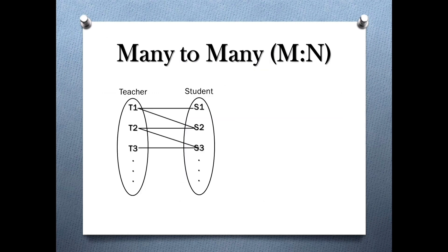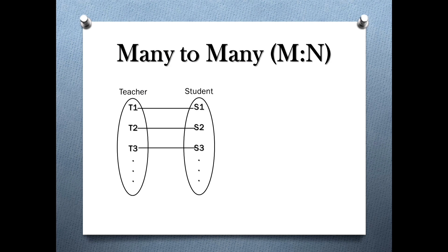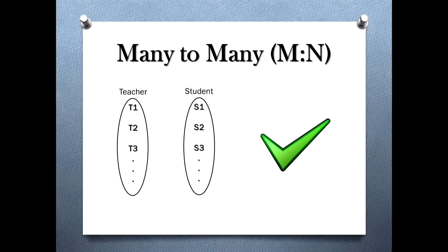The last type is many to many relationship. It can be defined as: if any number of entities in the first entity set can relate to any number of entities in the second entity set, and vice versa, then it is a many to many relationship. For example, one teacher can teach multiple students, and one student can be taught by multiple teachers. Even if every entity is related to just one entity of the other set, or if there is no participation, it is still a many to many relationship. In other words, every one to many, many to one, and one to one relationship comes under many to many, but their converses are not true.